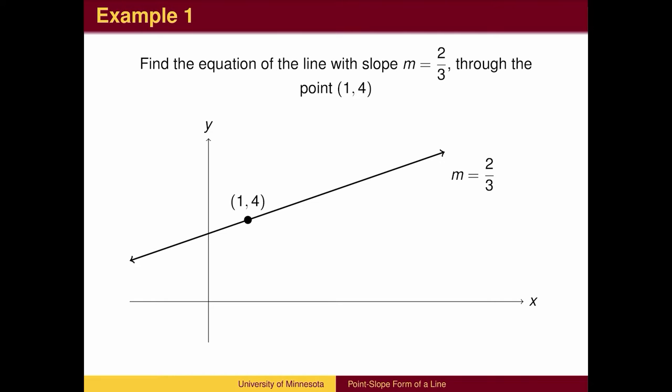Here is an example. We are given the slope of the line and a point on the line. We could graph the line by counting out the slope and connecting the dots. From the graph, we could try to find the y-intercept and use the slope-intercept form of a line.